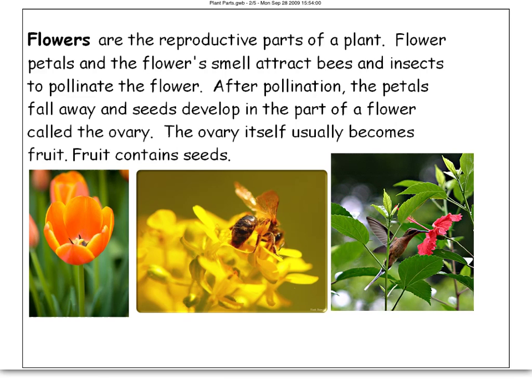The next part of the plant we're going to talk about are flowers, and flowers are the reproductive parts of a plant. Without flowers, you couldn't make more plants. Flowers' petals are bright and they smell nice, and that attracts bees and birds and other insects so they can pollinate the flower.